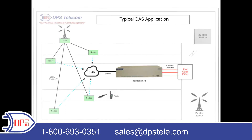The third common application is using our trap relay for the fire department. They have a distributed alarm system, or DAS, that outputs SNMP. They need to feed this into their fire panel, which only accepts contact closures. With the trap relay, they'll send SNMP via LAN directly to the trap relay. The trap relay then converts SNMP to contact closures via relay output that can tie into the fire panel. The Trap Relay 32 and 64 are our most common units. We also have smaller variations like the Trap Relay 4 and Trap Relay 8 available as well.